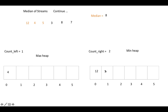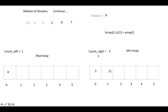After storing 5 into the min heap, we check whether it satisfies the min heap property. Using the formula: array[(i-1)/2] should be less than array[i]. Here array[0] = 12 is not less than 5, so we swap them. Now the min heap property is satisfied. Count_right is 2 and count_left is 1, so count_right is one more — the median is the root element of the min heap, which is 5.